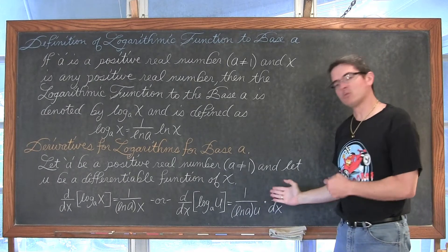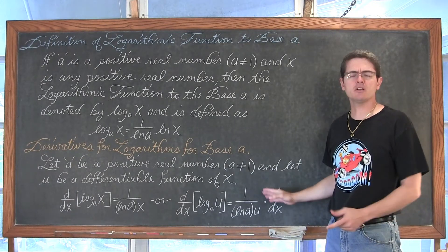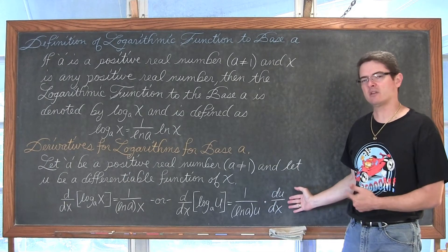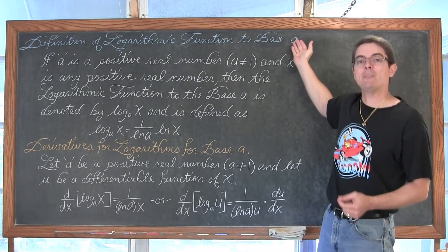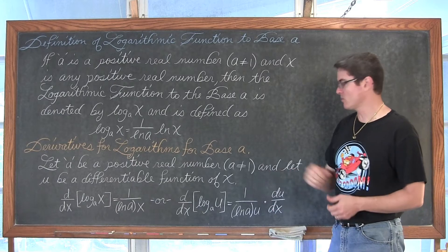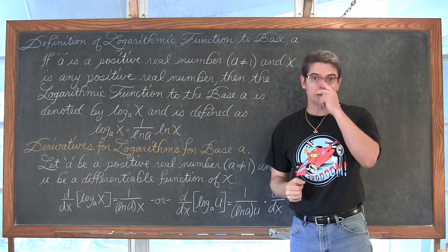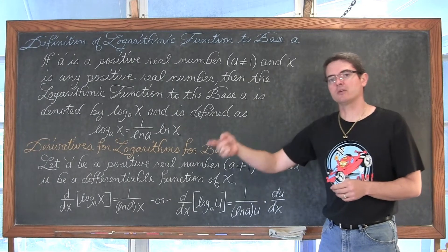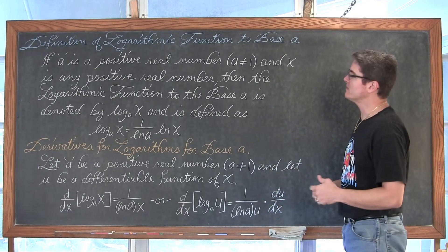Now we are going to have a new rule for this. If you memorize it then you can do these problems very quickly. If you don't have this memorized — and it is pretty close to the derivative rule we had for natural logarithms — you can remember what you learned back in Algebra 2 or Precalculus about changing the base of logarithms. So the first example I am going to do twice: once using this new rule and once where we change the base from base a to base e, or natural logarithm. The next two examples I am going to convert into natural logarithms by changing the base so that we can use the skills we already learned in the previous section.